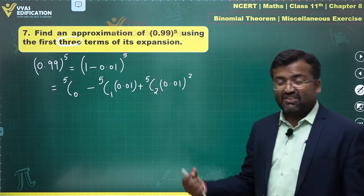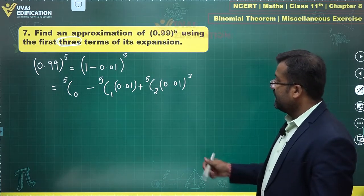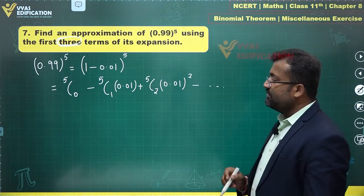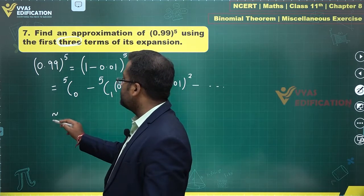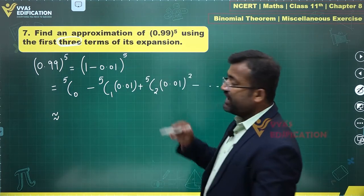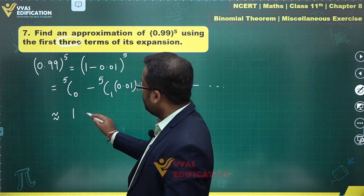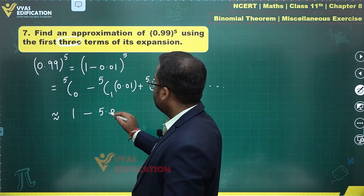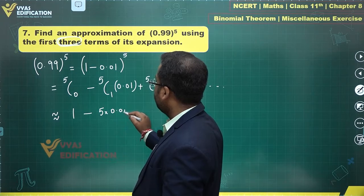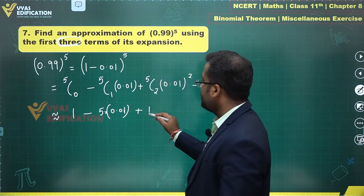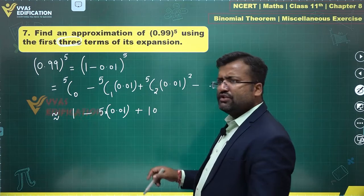The next term will be 5C3 with a minus but that's not required. There will be plenty other terms but we are looking at approximate value. So this is approximately equal to 5C0 which is 1 minus 5 times 0.01 plus 5C2 which is 10 times 0.01 square.